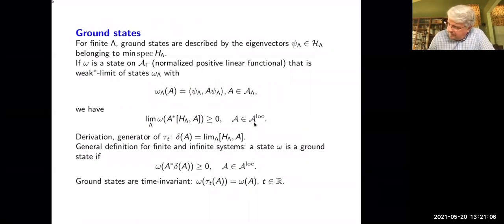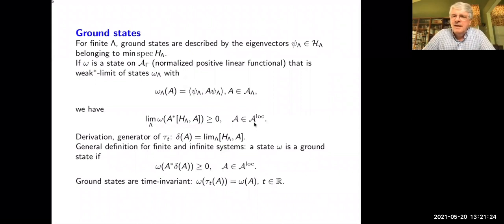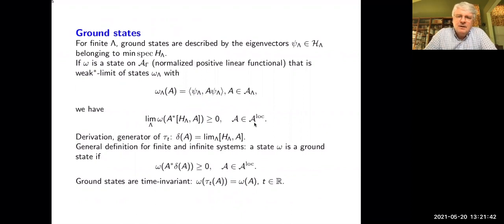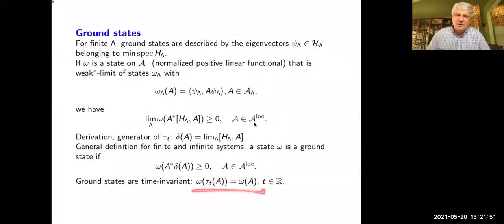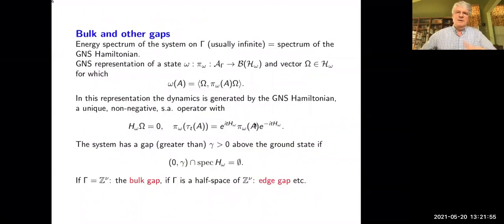The limit of taking the commutator with the Hamiltonian H_lambda, I call delta — I don't include the i in the definition of this derivation, so I don't have to take it out when I write the ground state condition. That's why, compared to Yoshiko's definition, there is no imaginary i there. Delta is the commutator with the Hamiltonian, and this will converge especially because you have some kind of short-range interaction condition. The ground state will be time-invariant, and in the GNS representation, the dynamics is implemented by a unitary group generated by a self-adjoint operator — the GNS Hamiltonian.